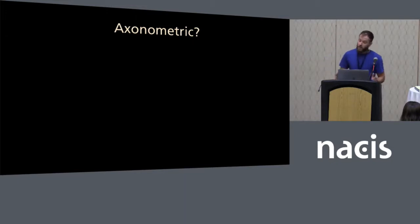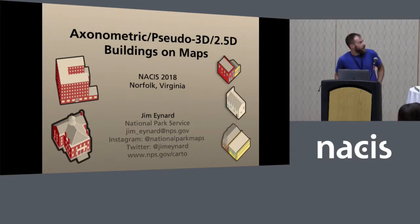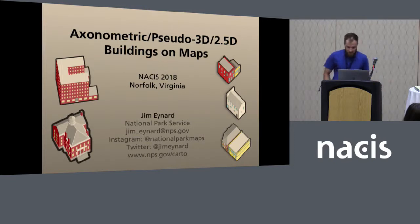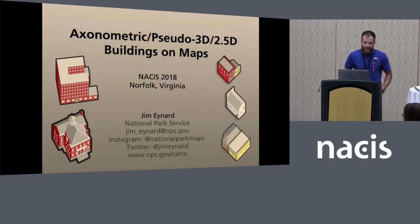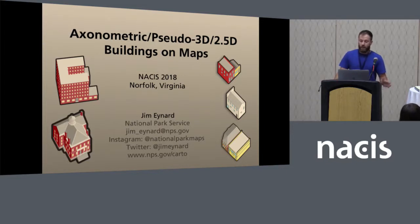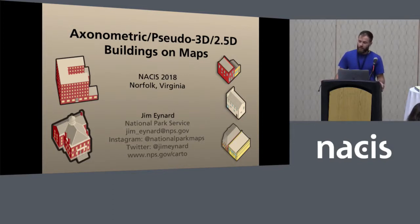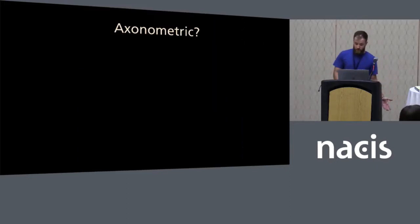This is my only slide with all text, and after this we'll get into pictures and maps and buildings. I use three names: exonometric, pseudo 3D, and 2.5D. I sort of put them on there as a joke, although it's not very funny. They're interchangeable names that I use. One idea was to settle on a name for what to call these. Exonometric is a little technical so I'm not a huge fan of that. I think pseudo 3D is what I usually call them — I'll even call them 3D buildings. The distinction is not very significant.